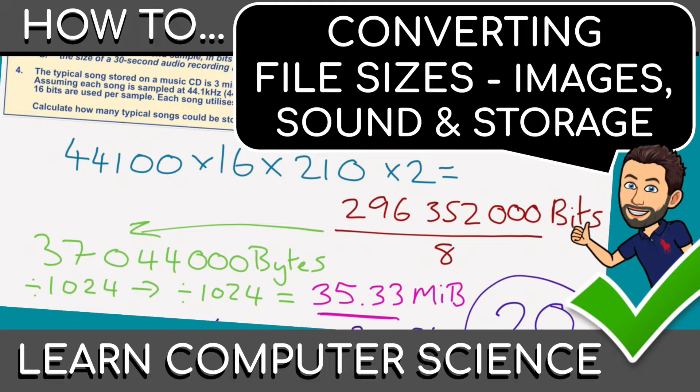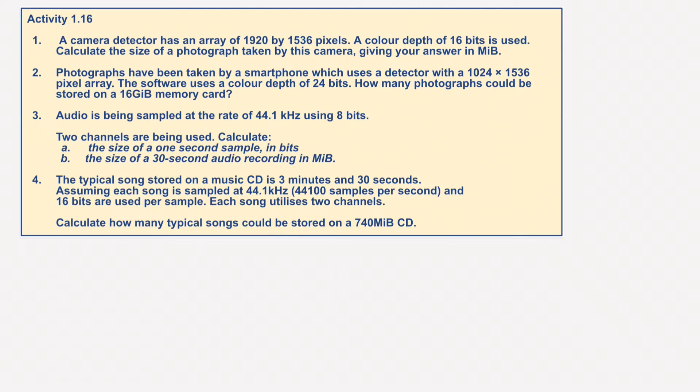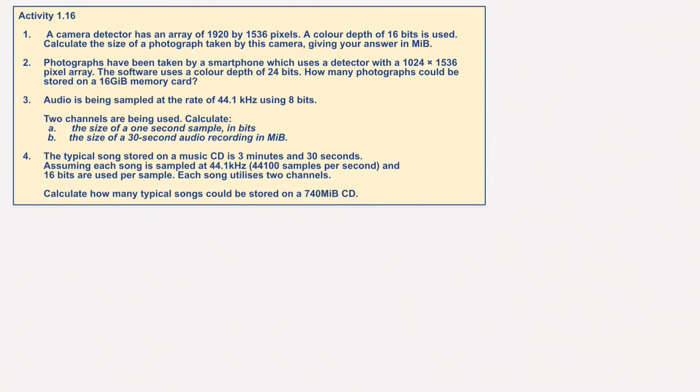And here we have some calculations to do. We've got four different scenarios. Let's have a look at this. We're going to start with the first one. A camera detector has an array of 1920 by 1536 pixels. A color depth of 16 bits is used. Calculate the size of a photograph taken by this camera. Give your answer in maybe bytes or megabytes.